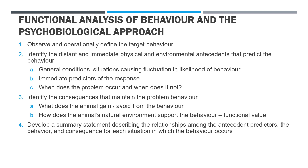We identify the immediate and the distant antecedents to the behaviour — the general conditions that give rise to it, the immediate predictors — identifying when the behaviour occurs and when it doesn't occur. We look at the consequences that maintain the problem behaviour: what does the animal gain or avoid from doing the behaviour? How does the animal's natural environment support the behaviour? What functional value might it have? As a result, we develop a summary statement describing the relationships amongst the antecedents, the behaviour and consequences for each situation in which the behaviour occurs. That's standard procedure in applied behavioural analysis.